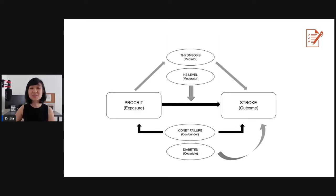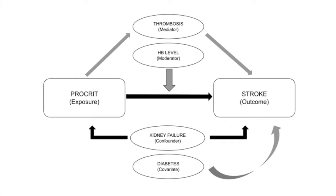To summarize: procreate is the exposure, stroke is the outcome, kidney failure is the confounder, diabetes is the covariate, hemoglobin level is the moderator or effect modifier, and thrombosis is the mediator.